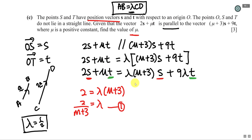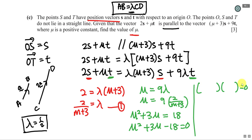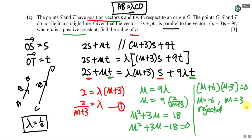Comparing the t-components: m = 9λ. Substituting λ = 2/(m + 3): m = 9 × 2/(m + 3) = 18/(m + 3). Multiplying both sides by (m + 3): m² + 3m = 18, so m² + 3m - 18 = 0. Factorizing: (m + 6)(m - 3) = 0, giving m = -6 or m = 3.